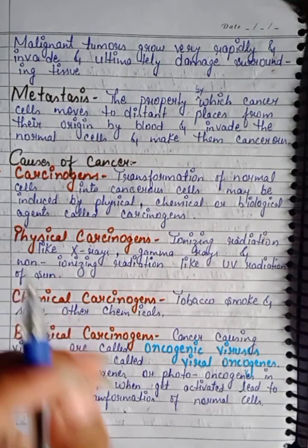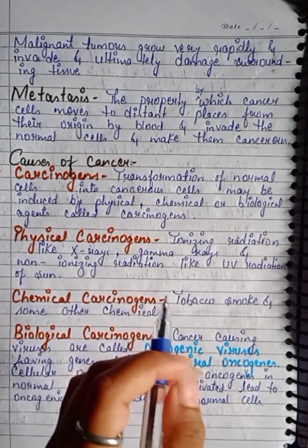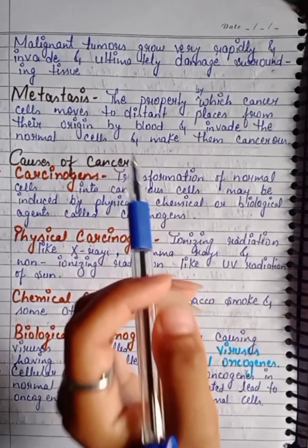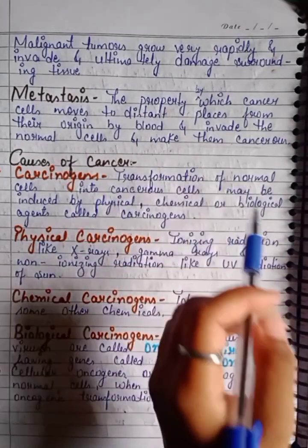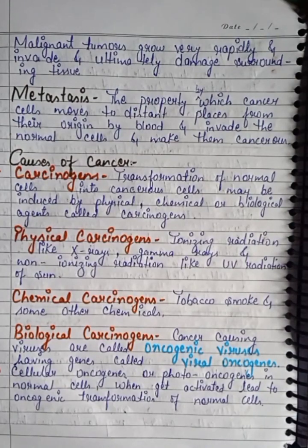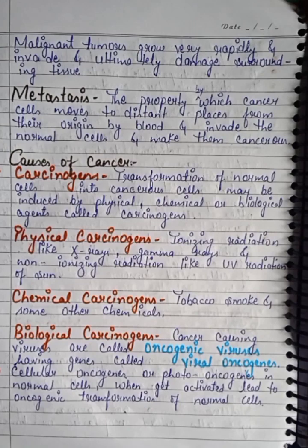Metastasis is the property by which cancerous cells move to distant places from their origin through blood, invade normal cells, and convert those normal cells into cancerous cells.